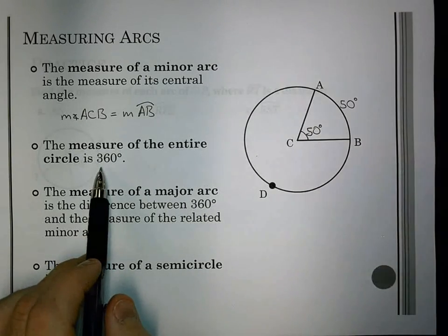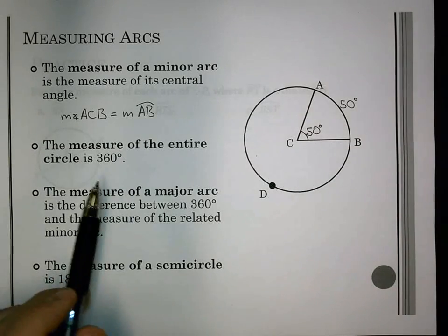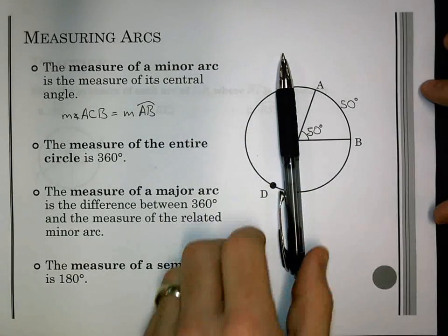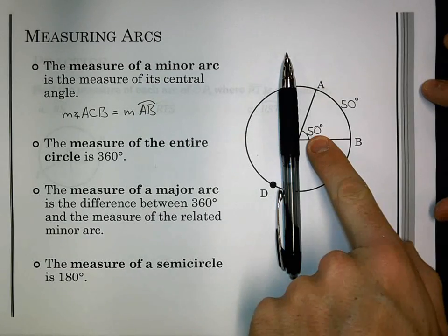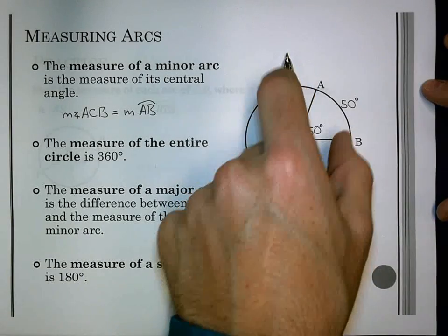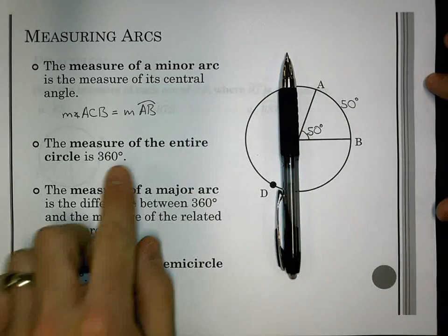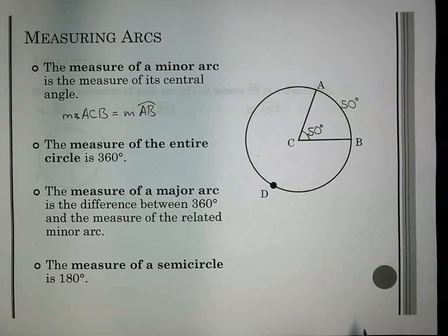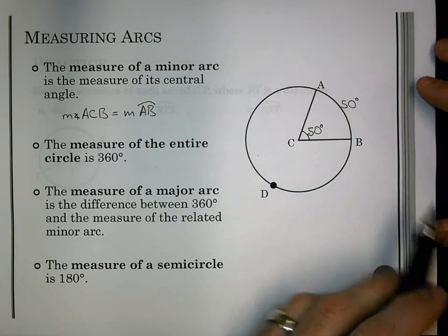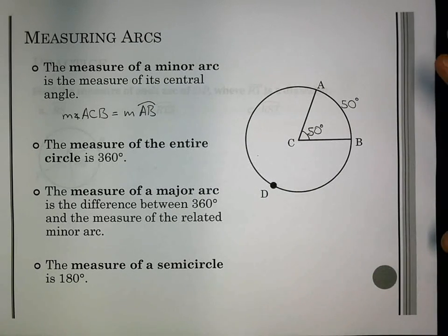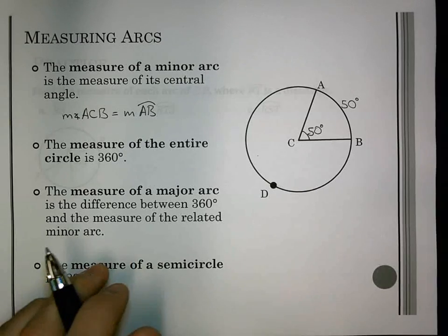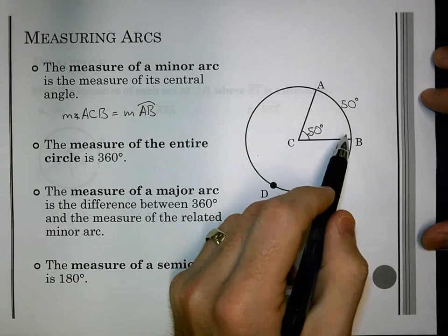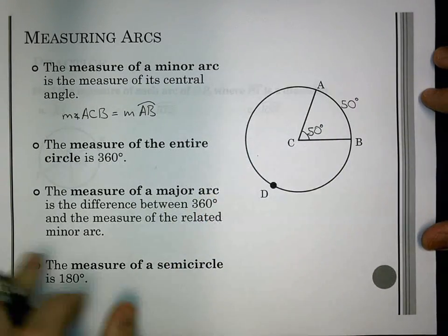If it was 70 degrees, it'd be 70. 90 degrees, it'd be 90. It's going to match up. Now, next thing we have here is the measure of the entire circle is 360 degrees. Well, let's use that idea to think about a minor arc. Well, it's 360 all the way around. If I had it at 90 degrees, a central angle. So, this angle, let's say, is 90 degrees. Well, 90 degrees would equate to one-fourth of that circle. Well, one-fourth of 360 is also 90. So, they match up nicely as we go.